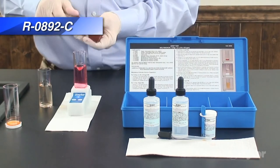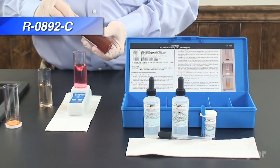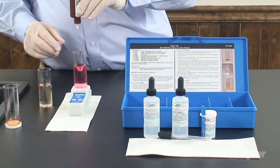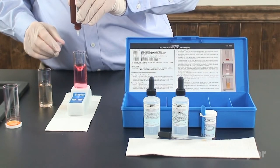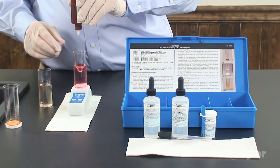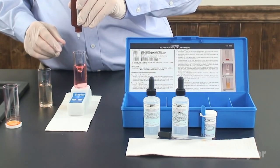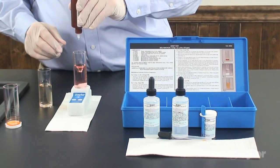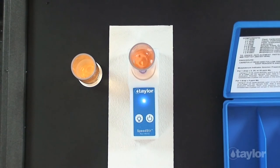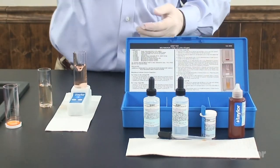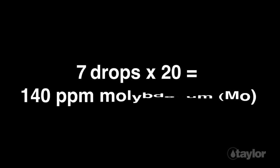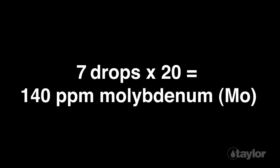Holding the bottle vertically, add molybdenum titrating solution drop-wise to the sample tube containing the water sample, swirling and counting after each drop. Continue to add drops until the color matches the sample tube containing the blank, or until no further change in color occurs. Multiply the number of drops of molybdenum titrating solution used by 20, and record the result as parts per million molybdenum.